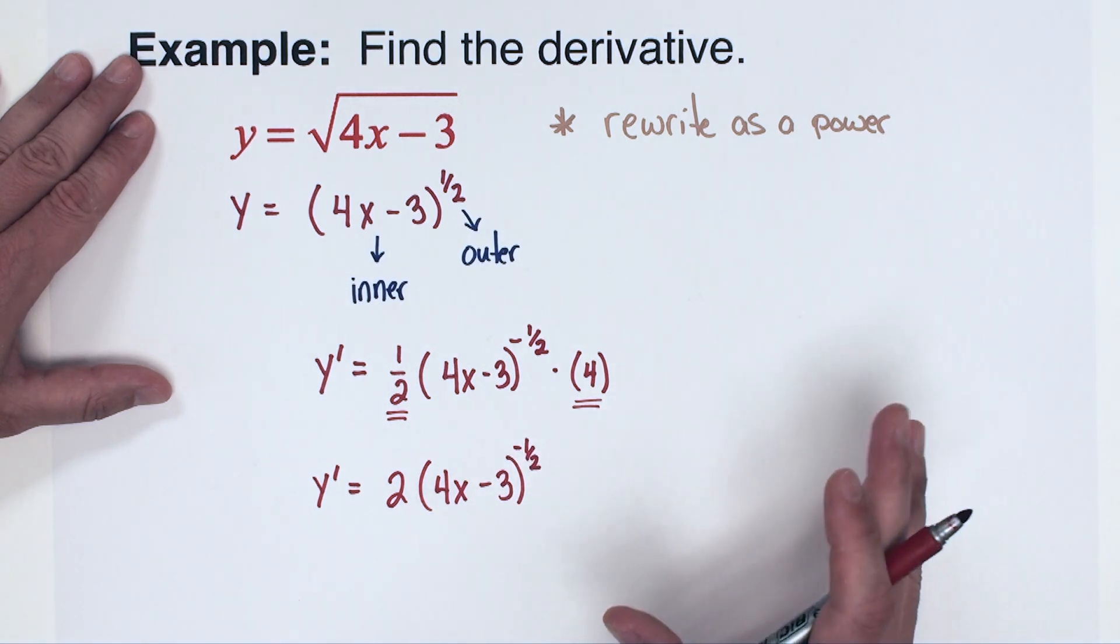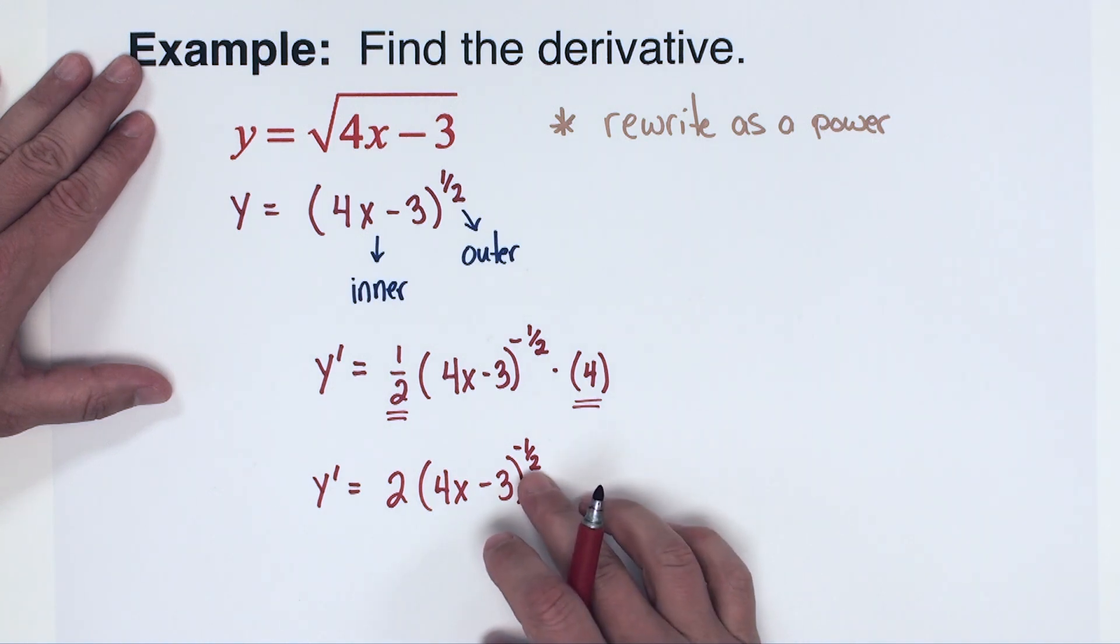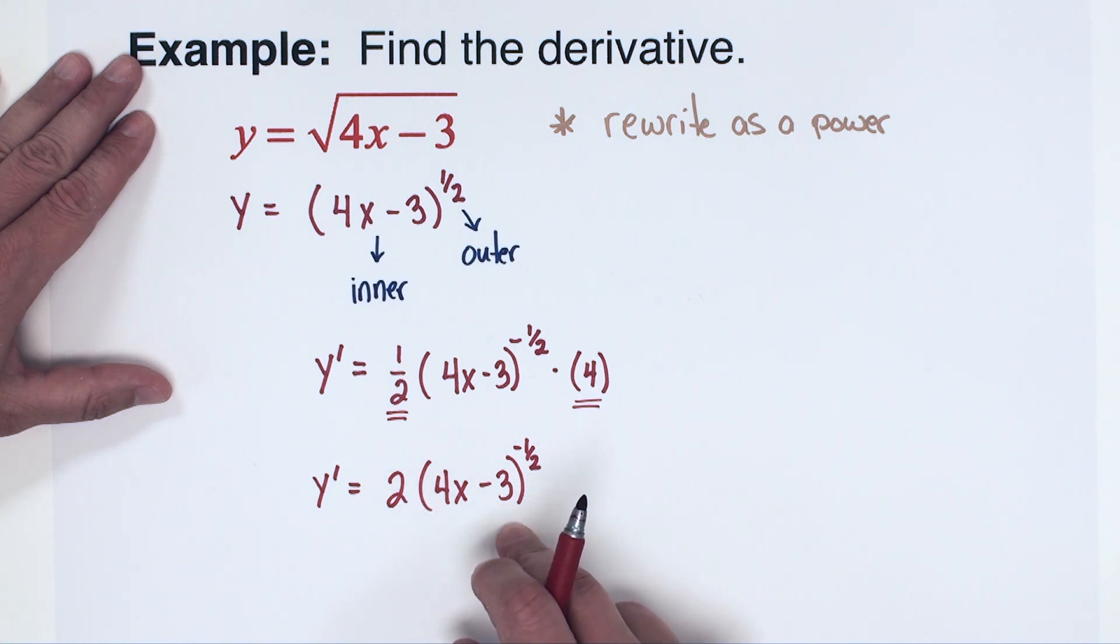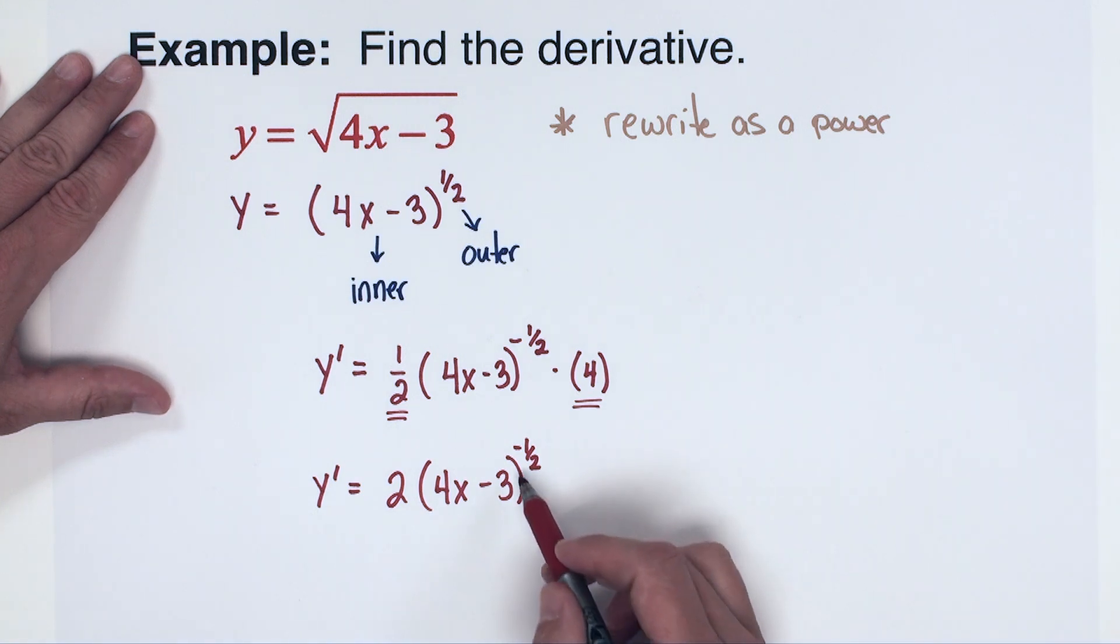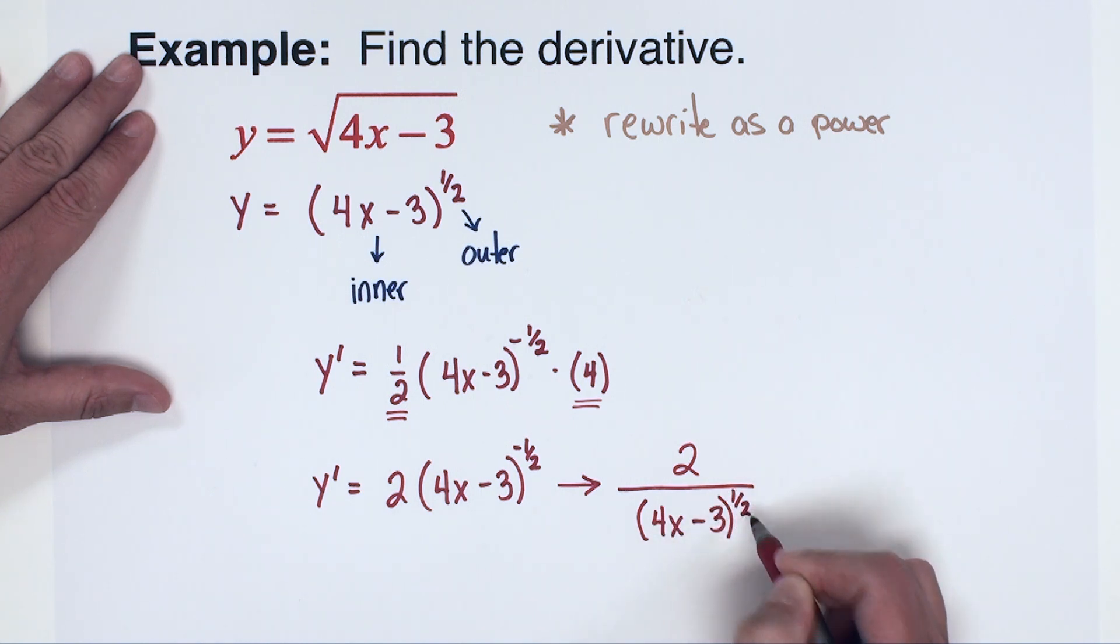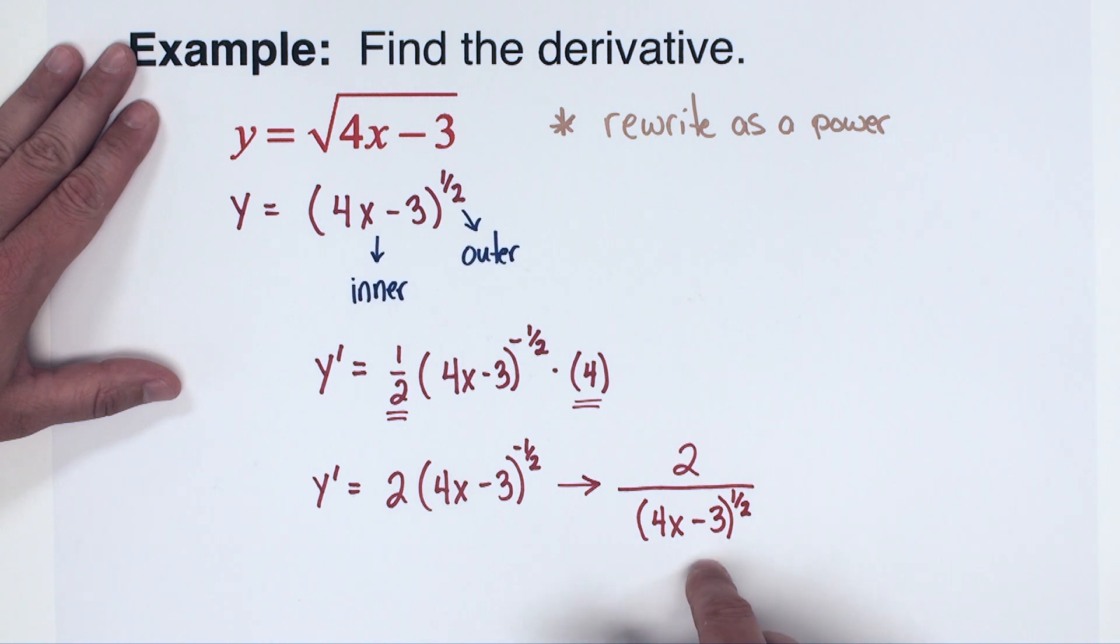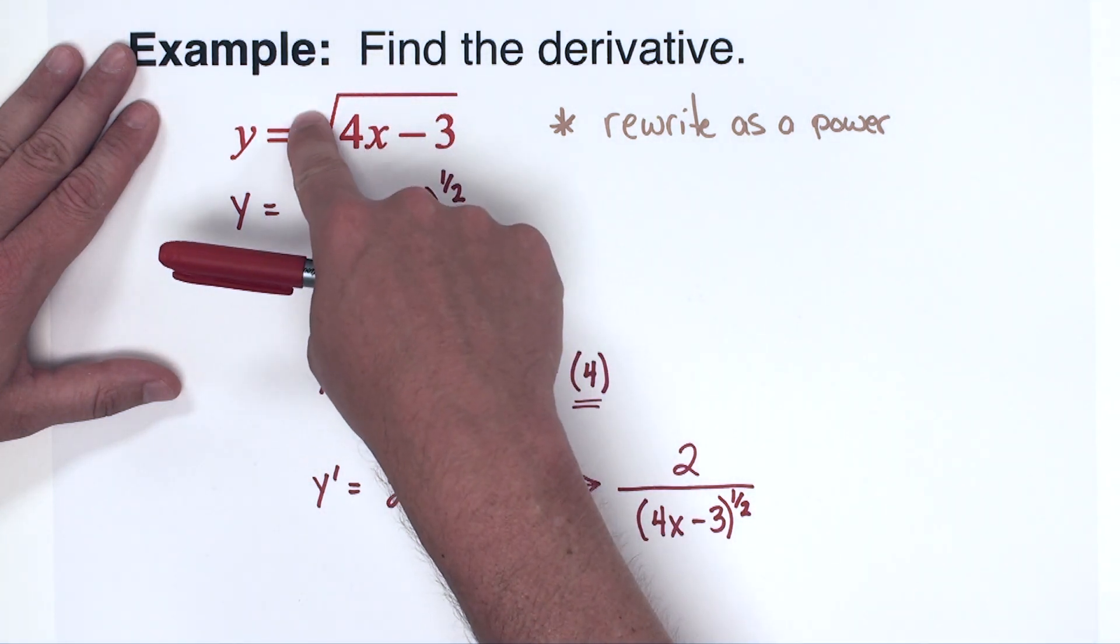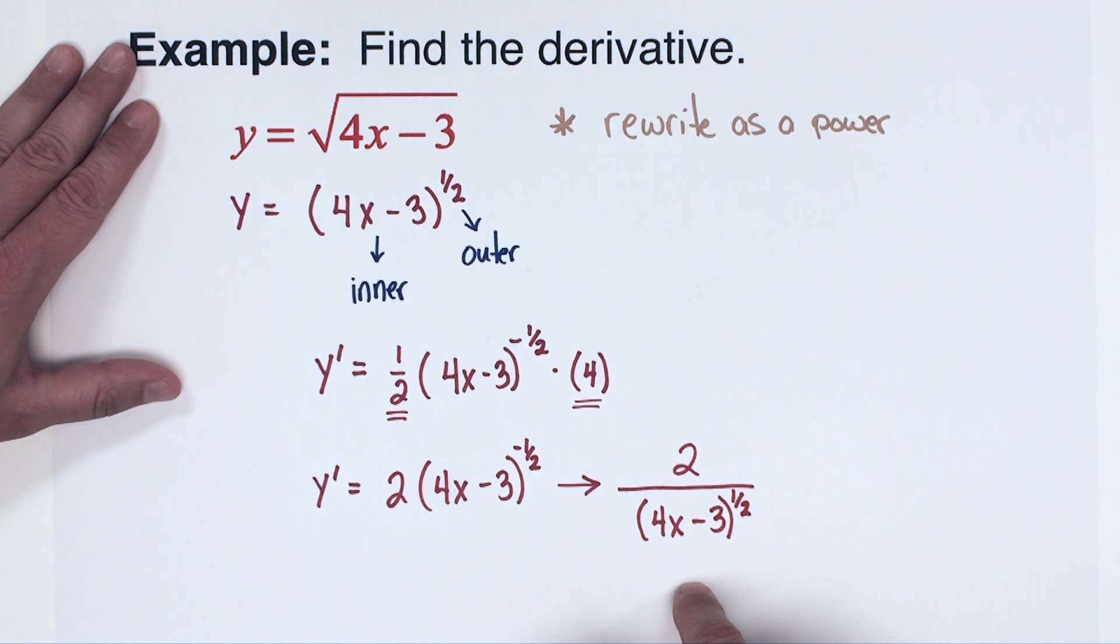Now some instructors, some texts are okay if you leave exponents as negative. So if your instructor says it's fine, this might just be finished for you. But I want to take it to a different place. I like to make negative exponents positive. So I might rewrite this as 2 over quantity 4x minus 3 to the positive one half power. Some instructors might even be a little bit more picky. If the problem started in radical form, if we can, we can put it back into radical form for our answer.